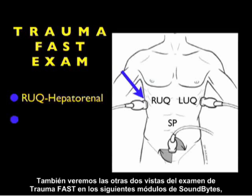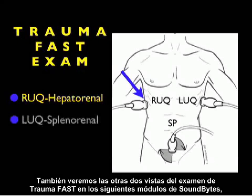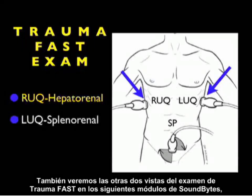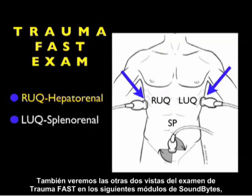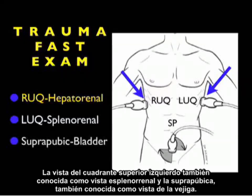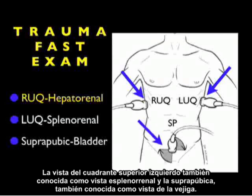We're going to cover the two other views of the trauma FAST exam in upcoming SoundBytes modules: the left upper quadrant view, also known as the splenorenal or perisplenic view, and the suprapubic view, also known as the bladder view.